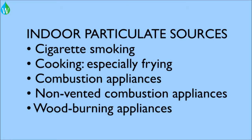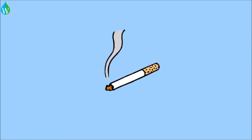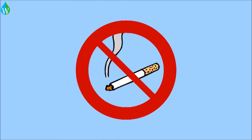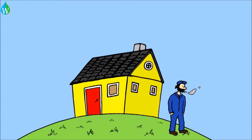We now need to think about how we could reduce the amount of particulates from these activities. Cigarette smoking is straightforward: cut down or stop. But if that's not a possibility, then make sure people smoke outside. This will reduce the concentration of particulate matter inside a building from having harmful effects on the body.